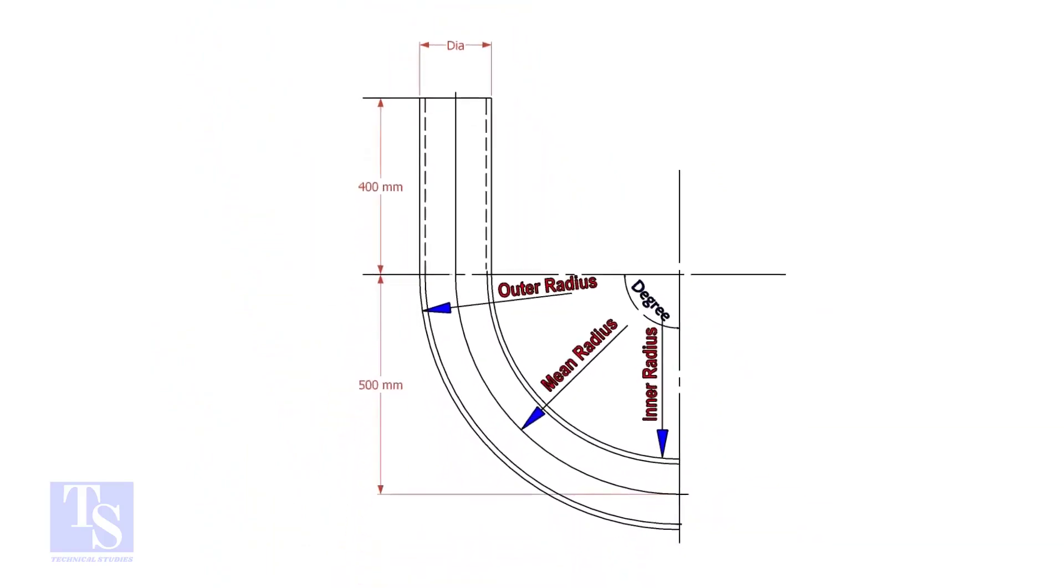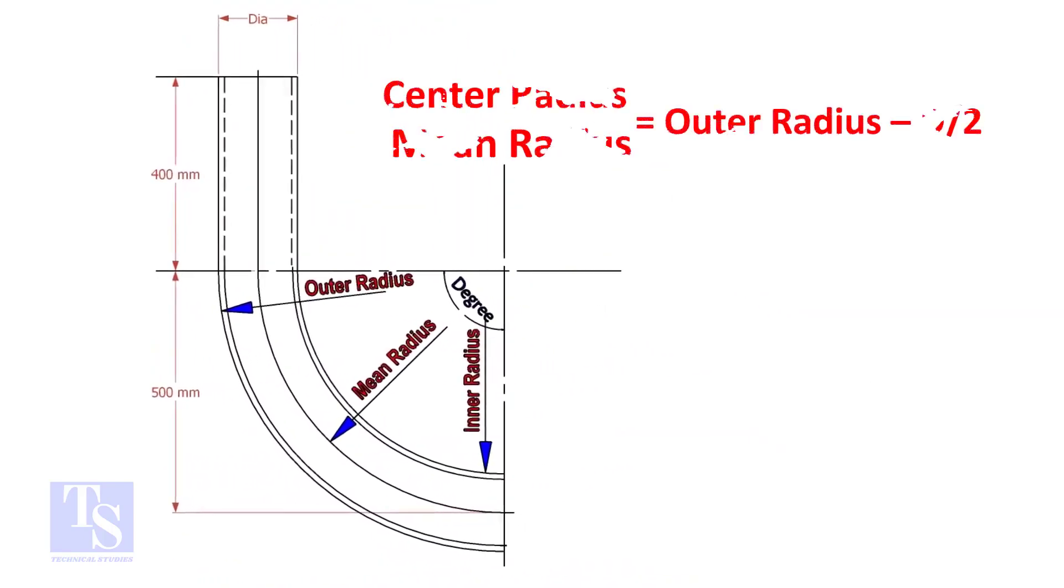In a drawing, usually the mean radius or the center radius is given. Suppose the outer radius is given. Subtract the half diameter from the outer radius to get the center radius.